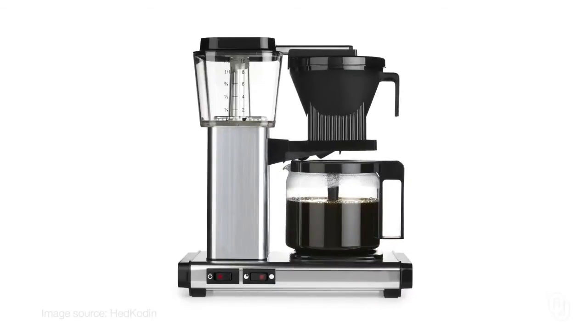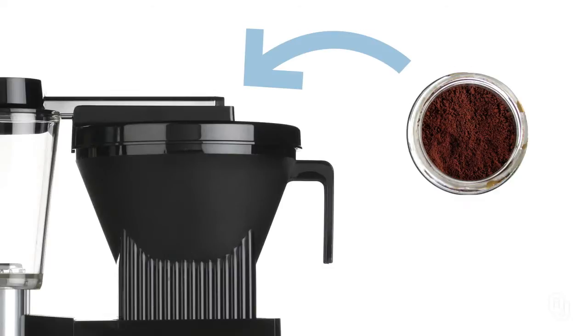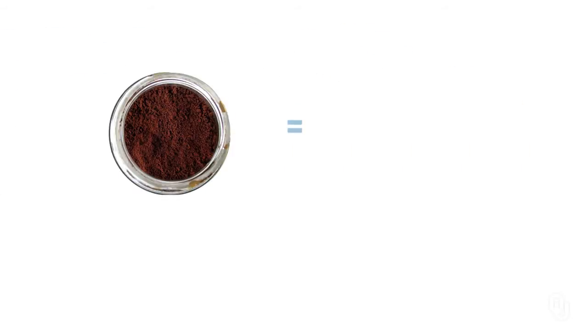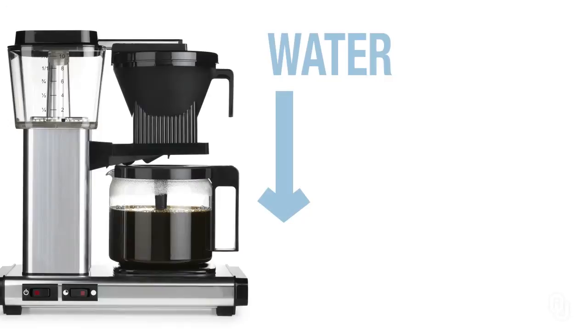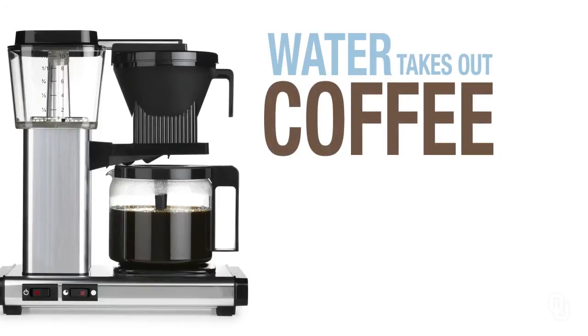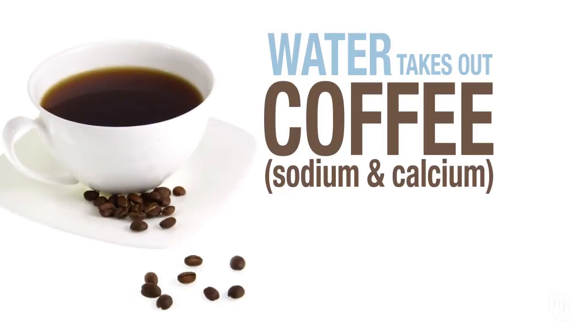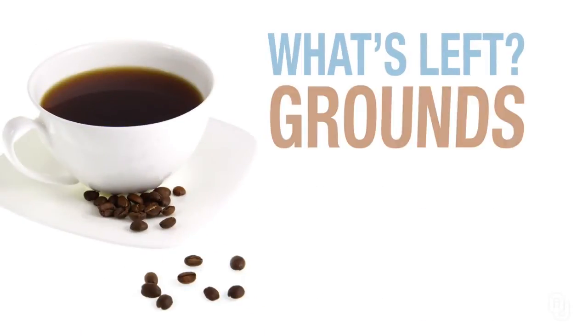Feldspar is another important mineral in granite. The acid water causes the decomposition of the feldspar, producing clay, and also ions like sodium and calcium in solution. A good analogy is a drip coffee maker: the coffee is like the feldspar, the water goes through and takes out the sodium and calcium — like the coffee you drink — and what's left behind are the grounds, which are like the clay.